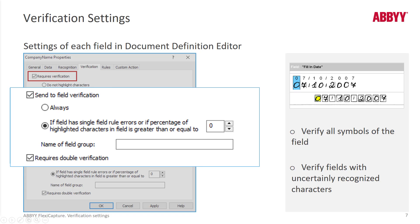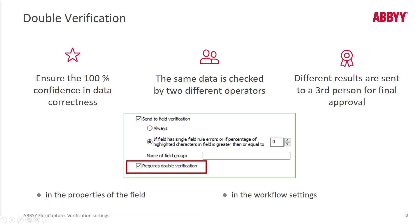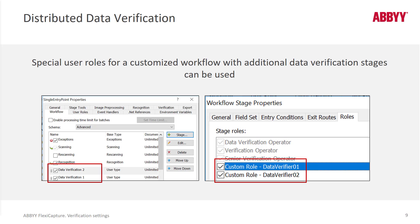You can send to field verification always, which means always verify a certain field. Double verification is allowed out of the box, where the same data is checked by two different operators — if there's a difference in the data, a third person adjudicates. You can set up custom verification queues and then set up custom user roles with specific capabilities that point to those custom queues, which can be very handy and powerful.